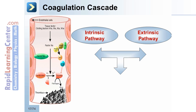In the intrinsic pathway, the starting point is the formation of the primary complex on collagen by high molecular weight kininogen, pre-kallikrein, and factor XII. Factor XII is also known as Hageman factor. Pre-kallikrein is converted to kallikrein when factor XII is activated. Factor XIIa activates factor XI, which in turn activates factor IX. Factor IX plus its cofactor VIIIa form the tenase complex, which activates factor X. This leads to the prothrombinase complex, which activates prothrombin to thrombin. Thrombin converts fibrinogen to fibrin and activates factor XIII, which crosslinks the fibrin to form a clot.